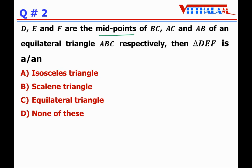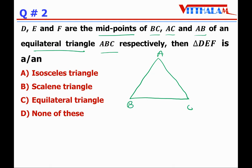Next: D, E, and F are the midpoints of BC, AC, and AB of an equilateral triangle ABC. D is the midpoint of BC, E is the midpoint of AC, and F is the midpoint of AB. Triangle DEF — this triangle is an equilateral triangle only.